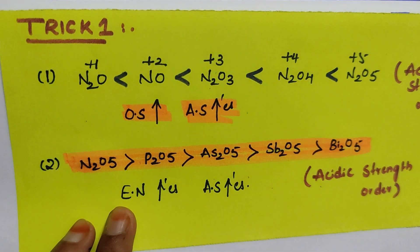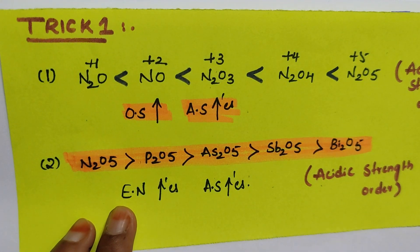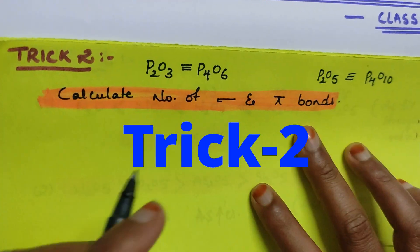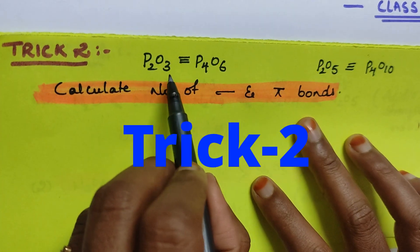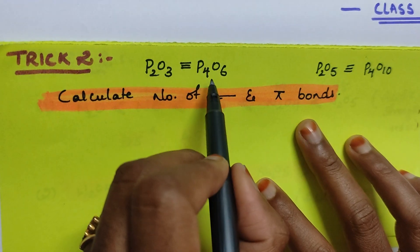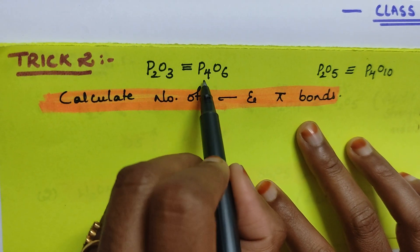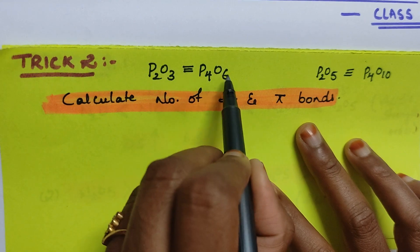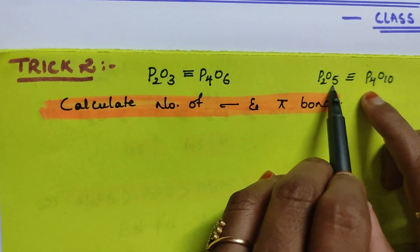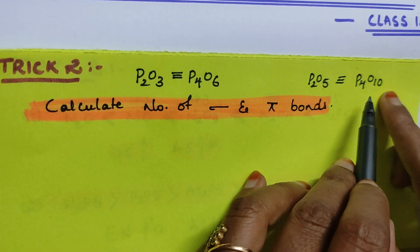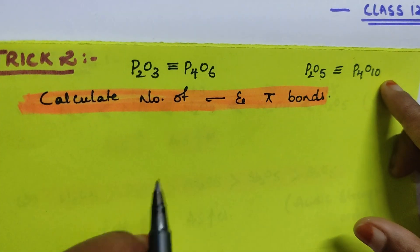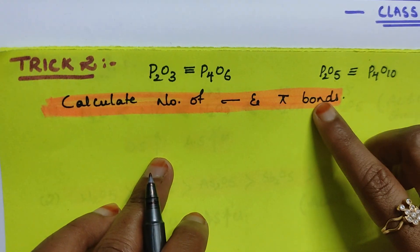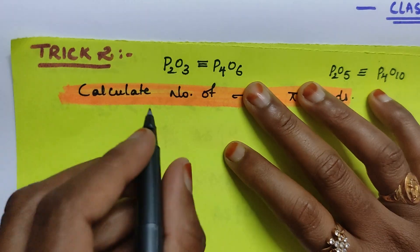Let's see trick number two. P2O3 actually exists as a dimer, P4O6. P2O5 also exists as a dimer, P4O10. The question is: calculate the number of sigma bonds and pi bonds.